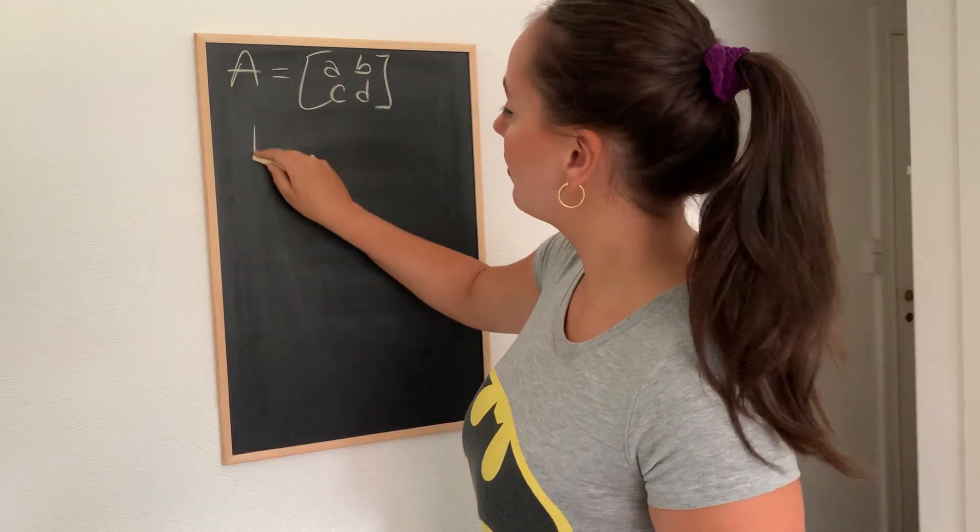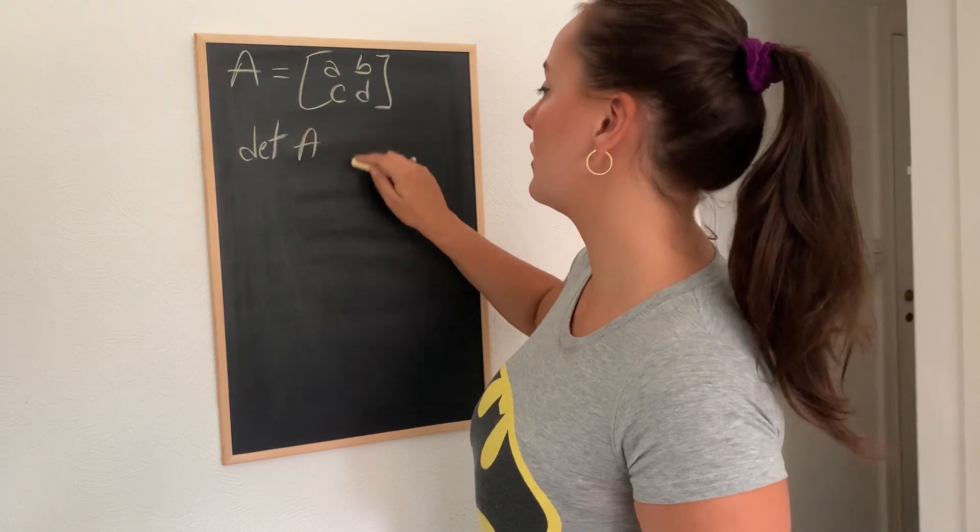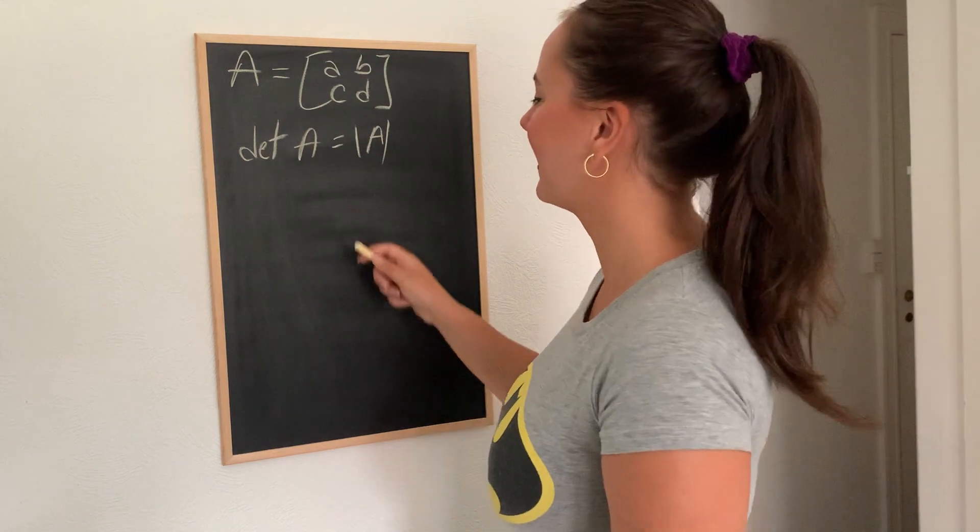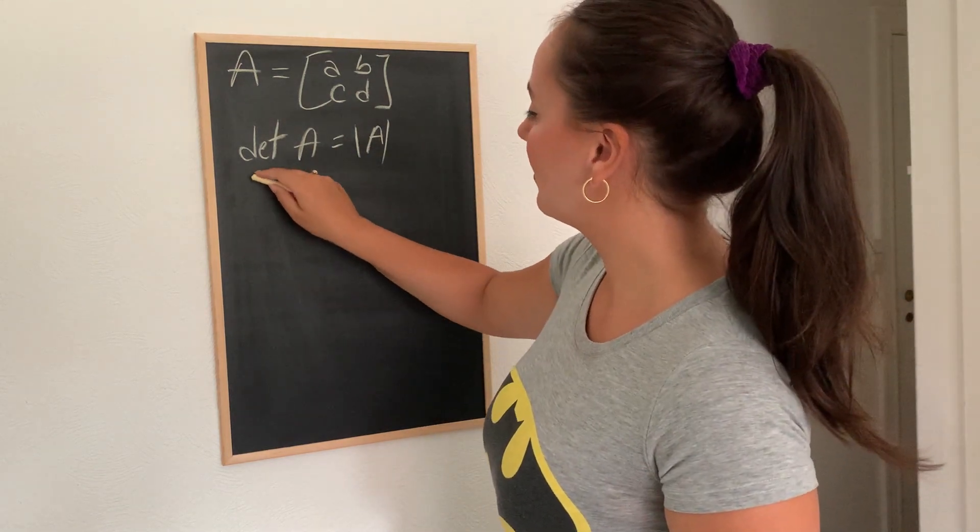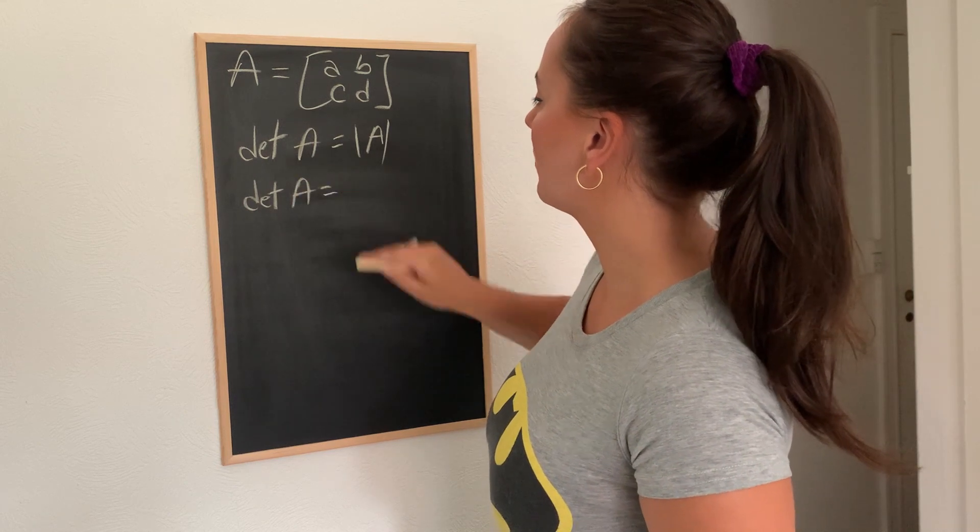All right. Now, we calculate or we denote the determinant as a determinant of A or A between bars. Now, if we want to calculate the determinant of A, we do it like this.